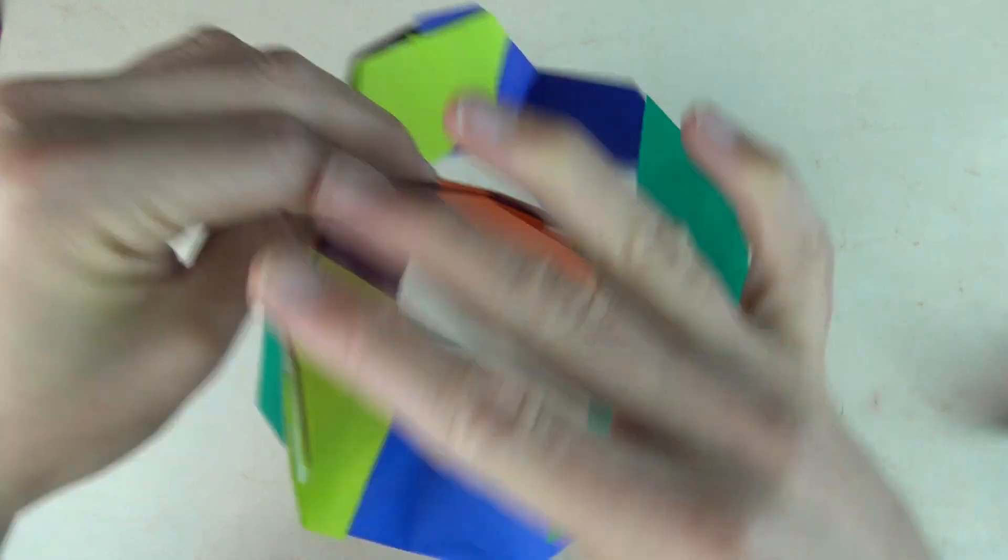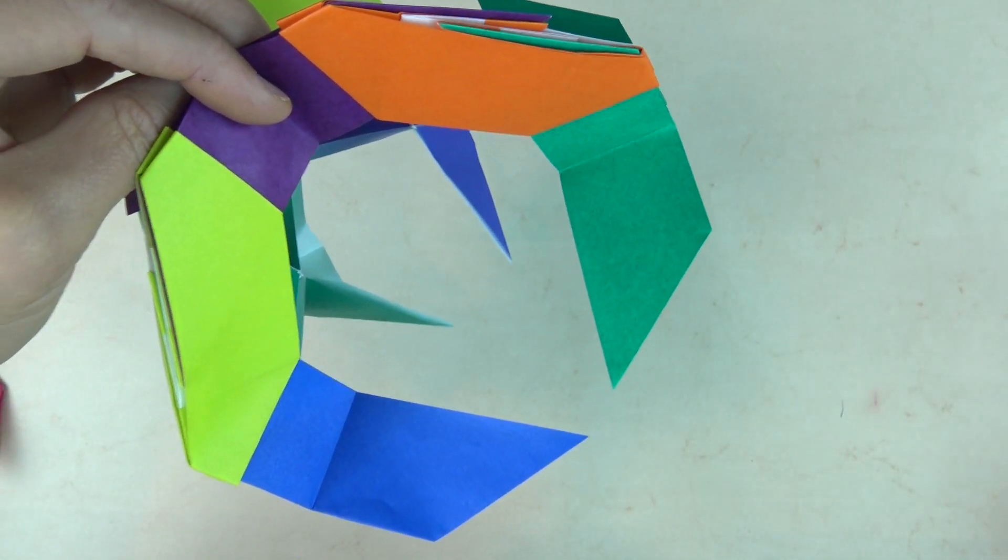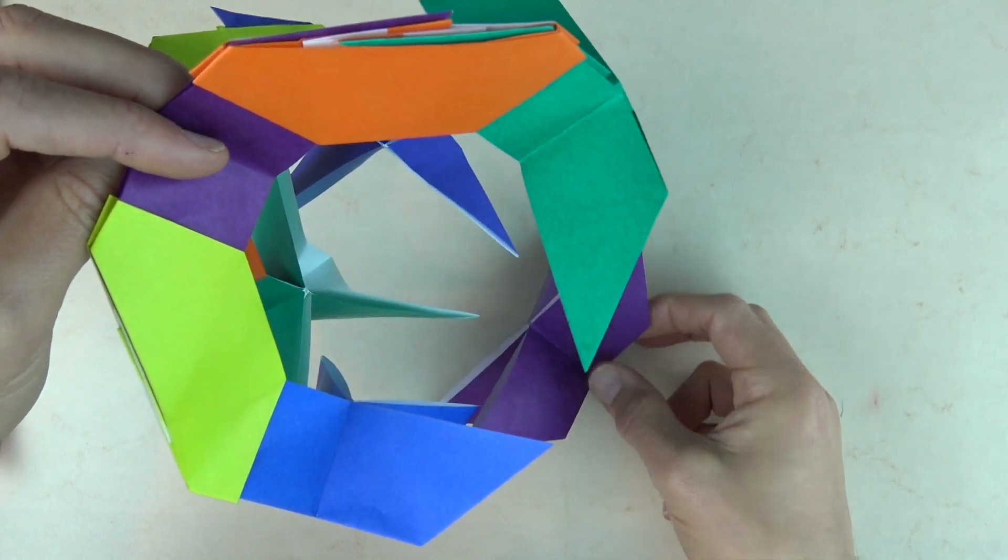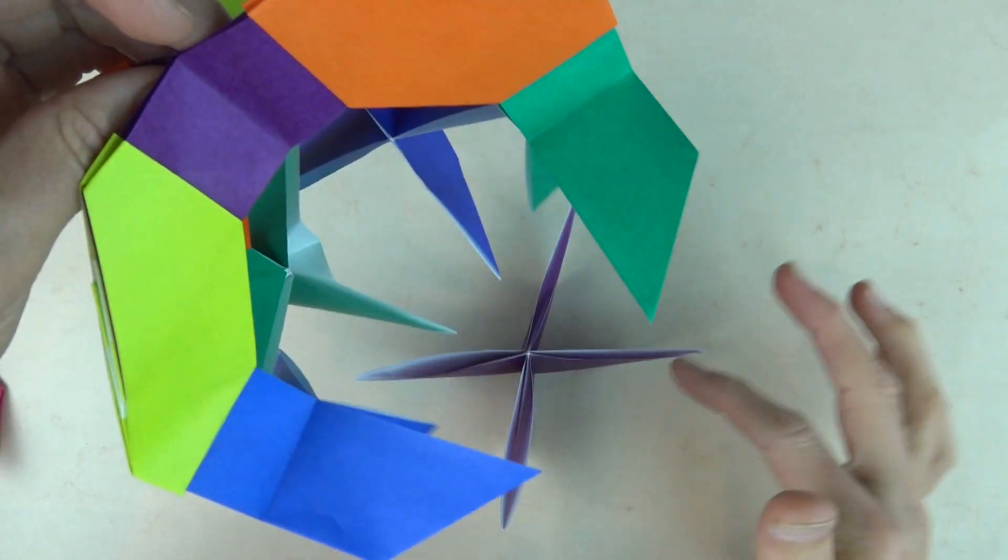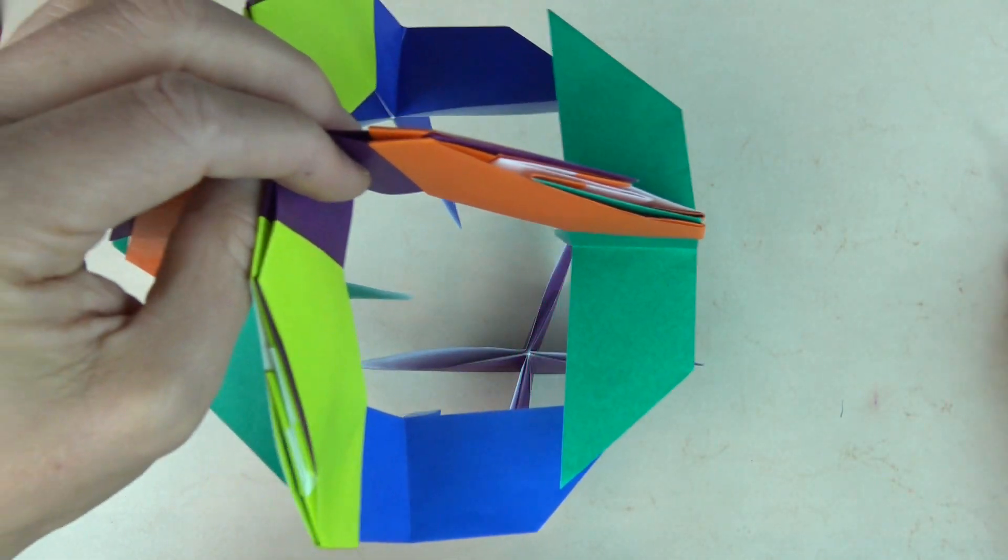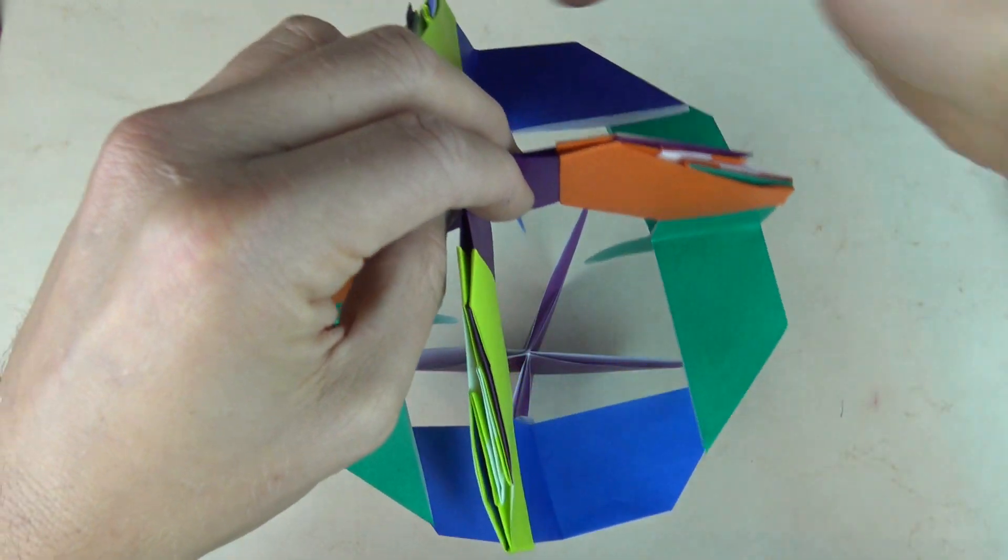Alright. So here we have the ball taking shape. We have almost all of the vertex modules in place. But one more goes down below. So I'm putting the purple opposite to the purple. And now we're going to do the equator.